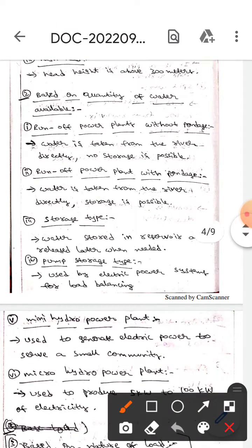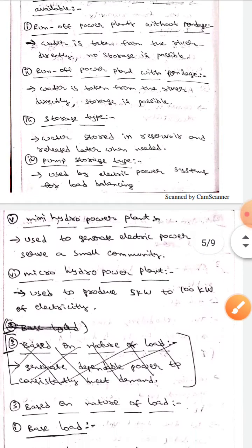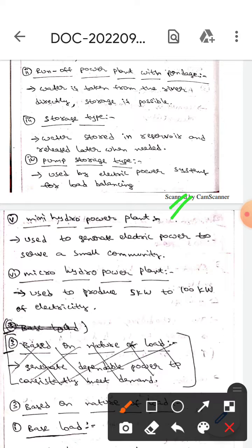The next one is pump storage type, which is used by electric power systems for load balancing. Mini hydro power plants are used to generate electric power to serve a small community. Micro hydro power plants produce 5 kilowatt to 100 kilowatt of electricity.